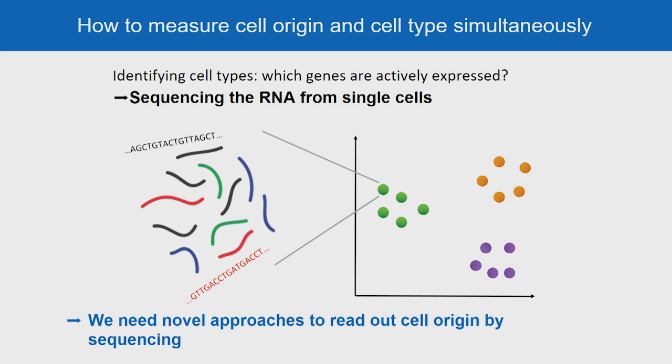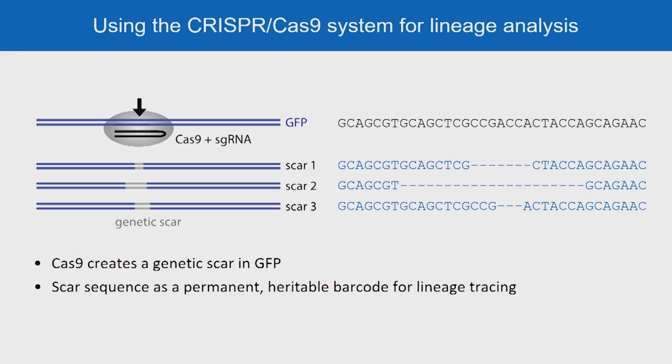But we also need to find novel approaches to simultaneously read out cell origin and lineage history by sequencing. Our approach to address this question is based on CRISPR-Cas technology. With Cas9, we create a double strand break in a GFP transgene. As this break gets repaired, we get formation of a genetic scar — a short insertion or deletion.